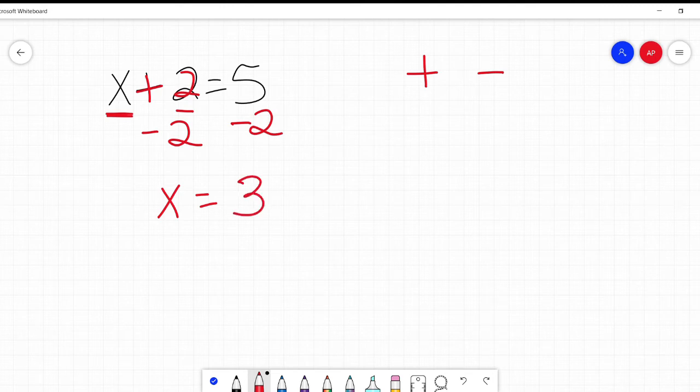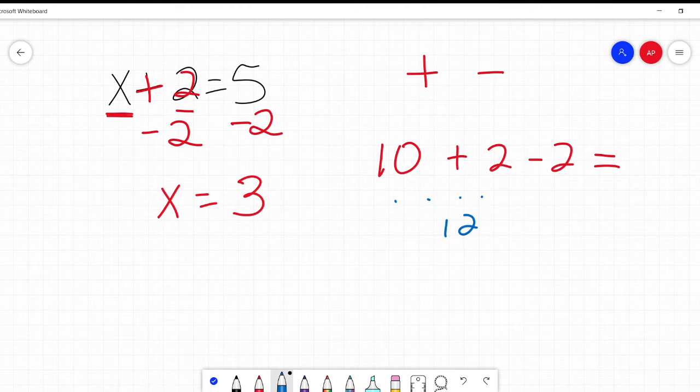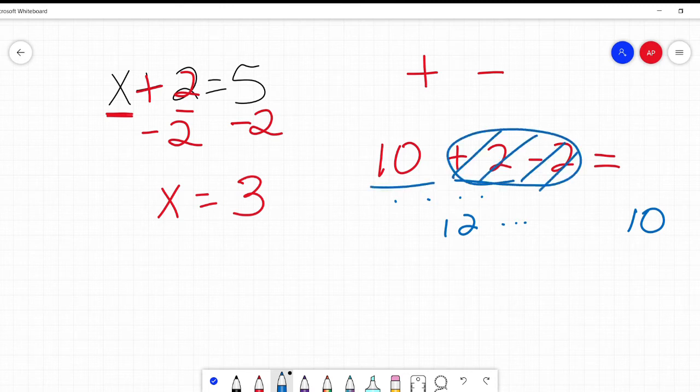To show a real number example that this plus 2 minus 2 undoes it, what if I had 10 plus 2 minus 2? What does that equal? Well, let's do it step by step. 10 plus 2 is 12. 12 minus 2 is 10. Hey, plus 2 minus 2, it's undone, and I am left with just 10.